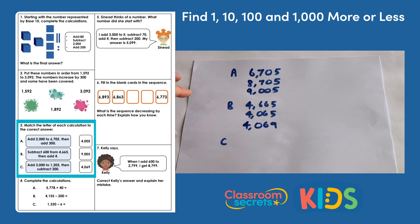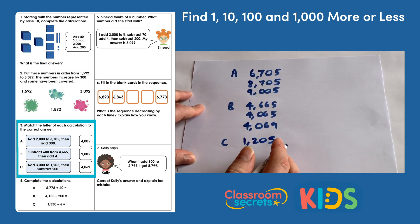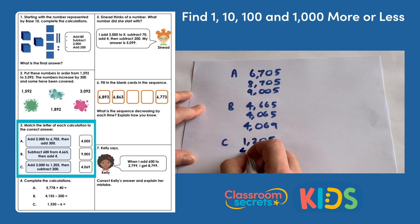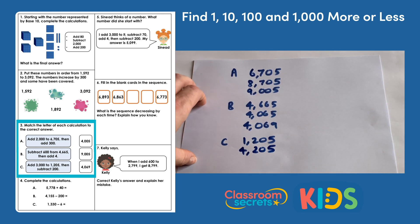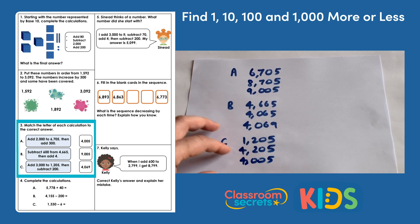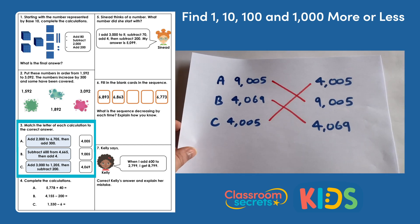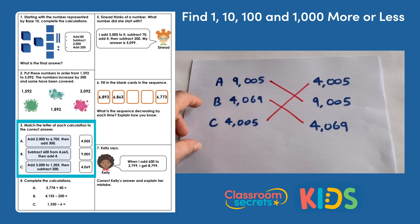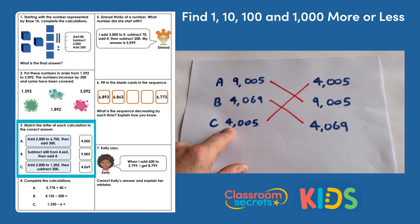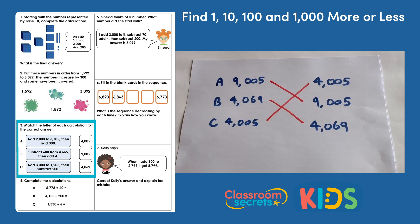For C, we are adding three thousand to one thousand two hundred and five, and then subtracting two hundred. If we add three thousand, that takes us to four thousand two hundred and five. And if we subtract two hundred, that will be four thousand and five. So putting the results in: A was nine thousand and five, B was four thousand and sixty-nine, and C was four thousand and five — and they match up with the numbers on the right-hand side.